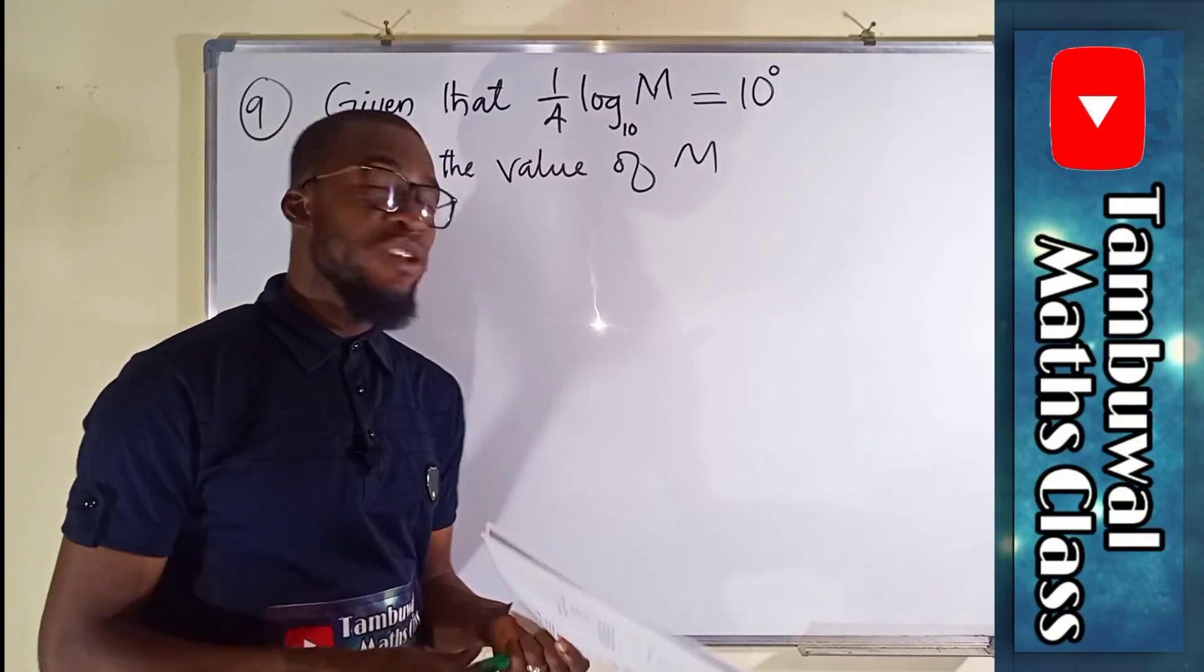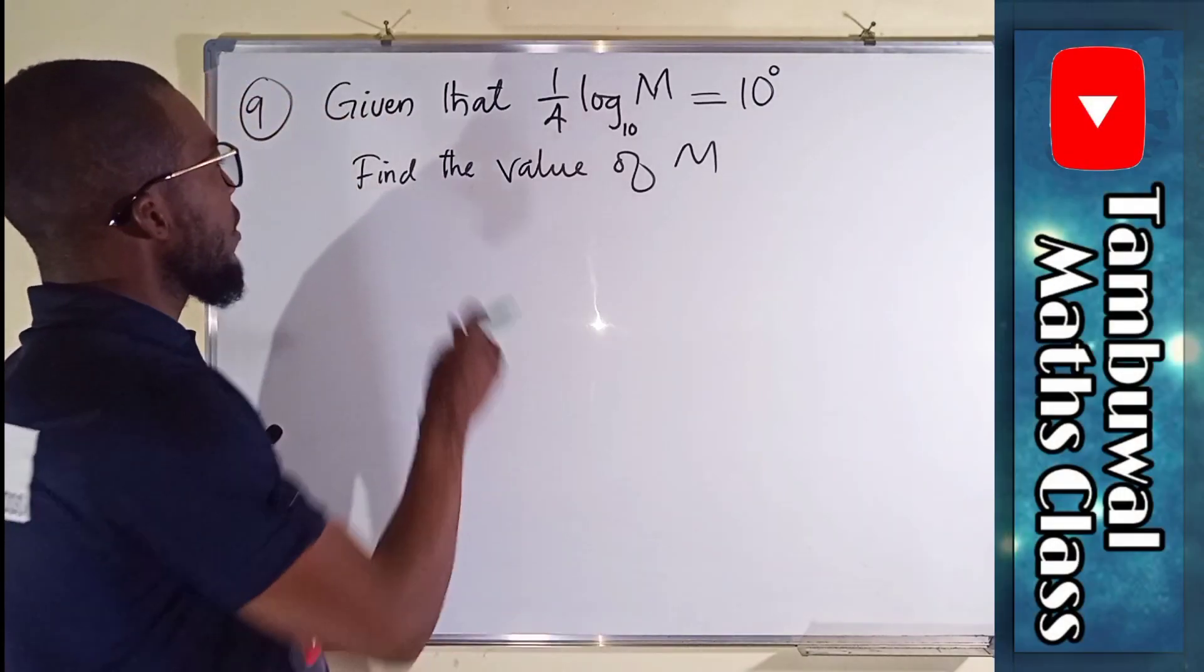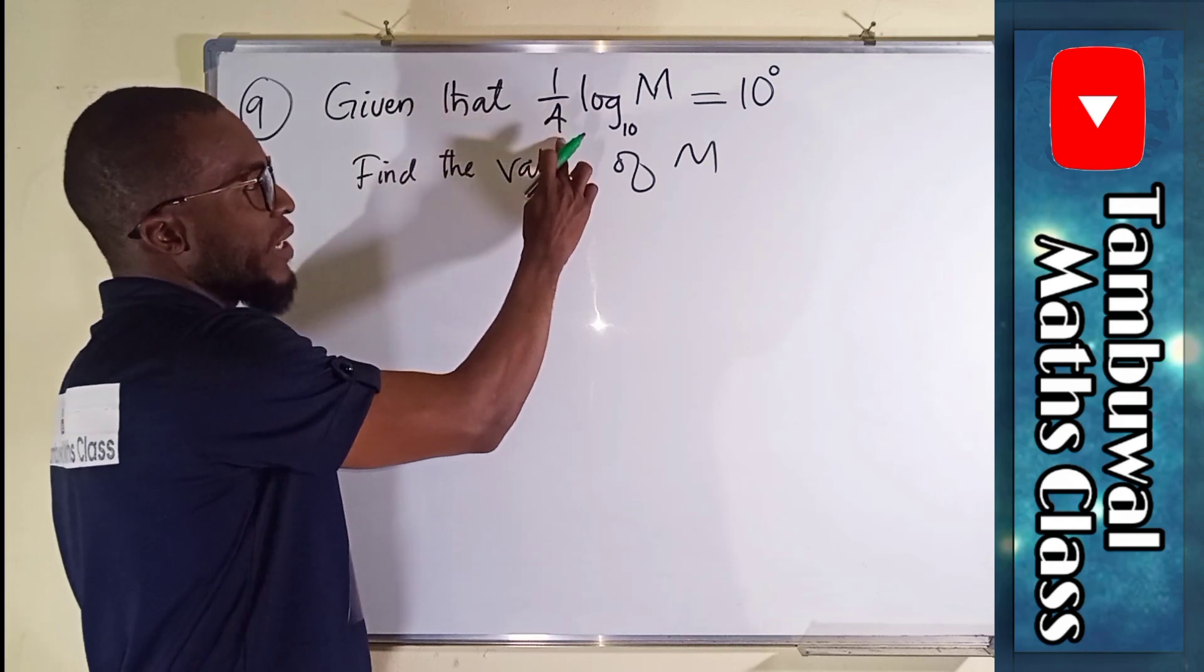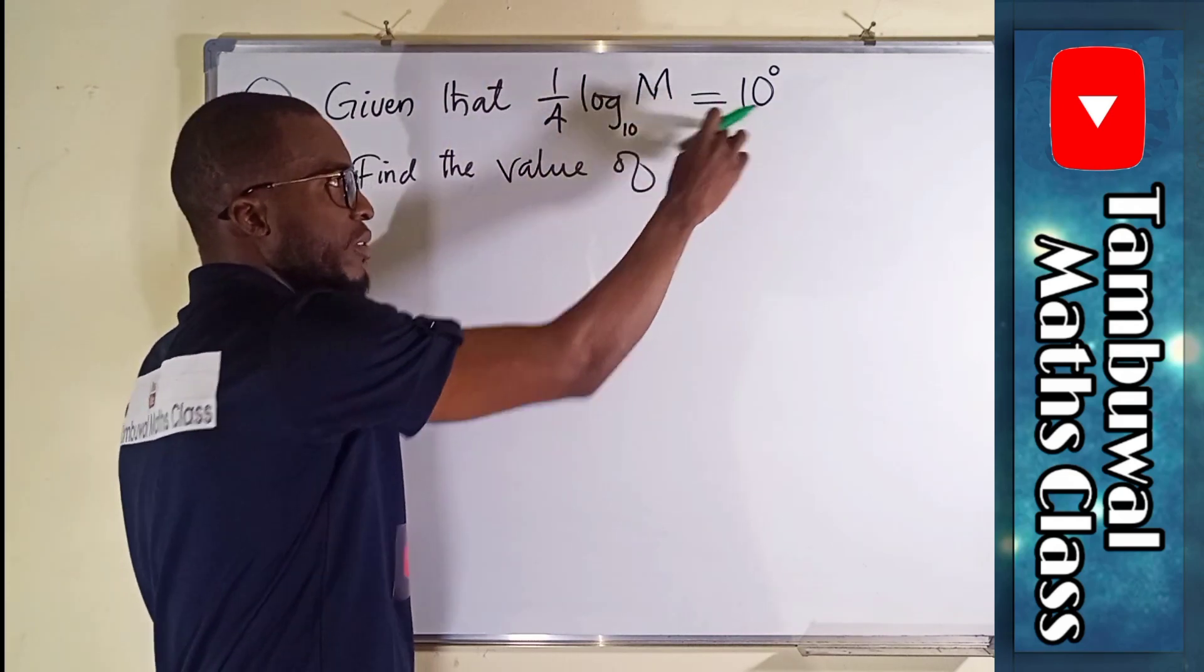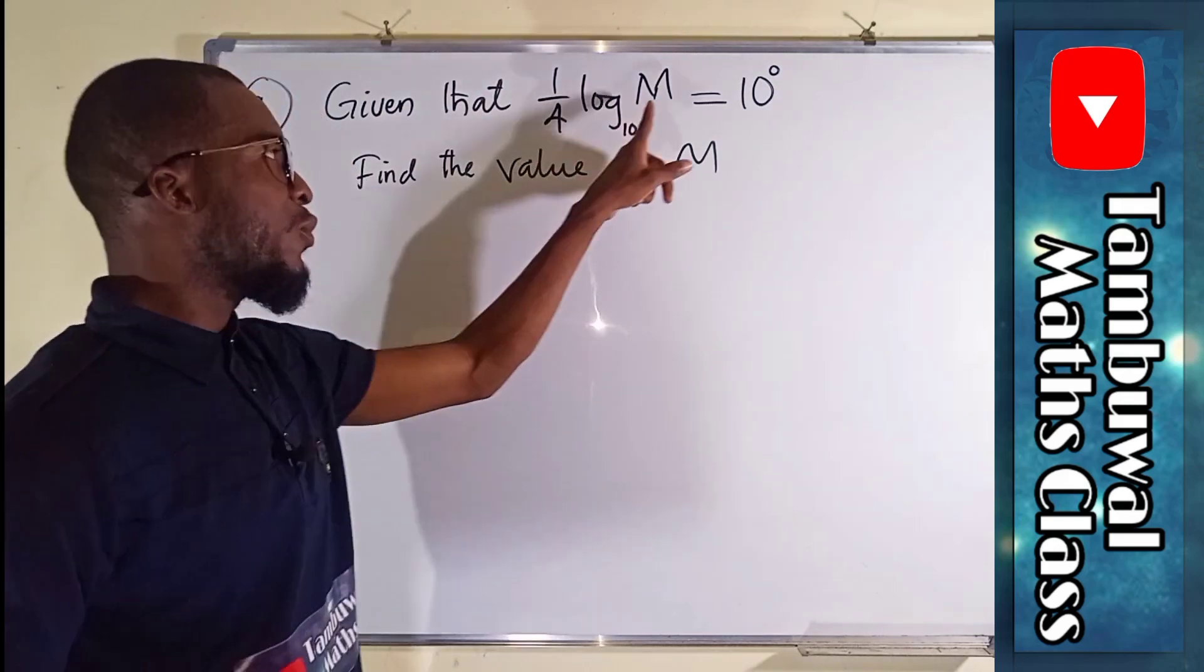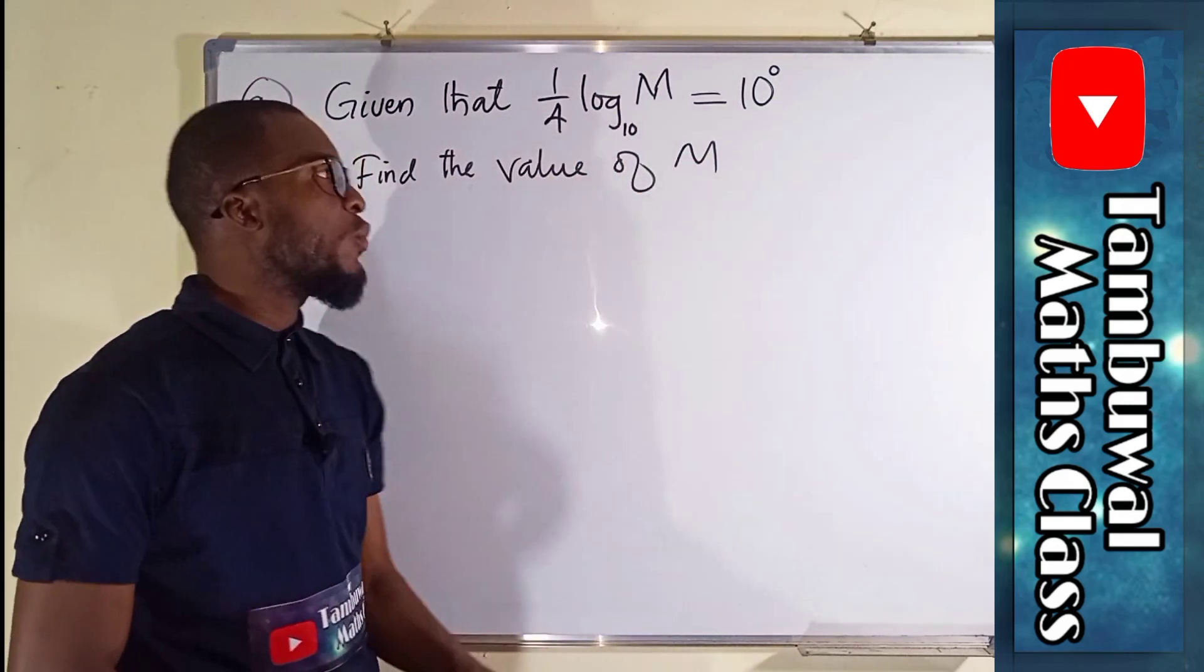Question number 9 is a logarithm question. It says given that 1 over 4 times log of M base 10 equals 10 power 0, we are asked to find the value of M that will satisfy this equation.